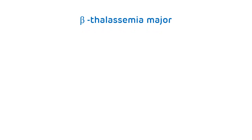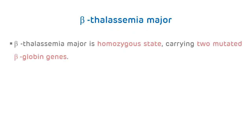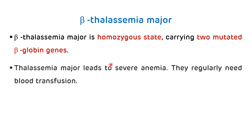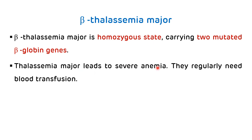Beta thalassemia major is a homozygous state carrying two mutated beta globin genes. Thalassemia major leads to severe anemia, and the person will need regular blood transfusions for survival. That is the mainstay of treatment for beta thalassemia major — frequent blood transfusion.